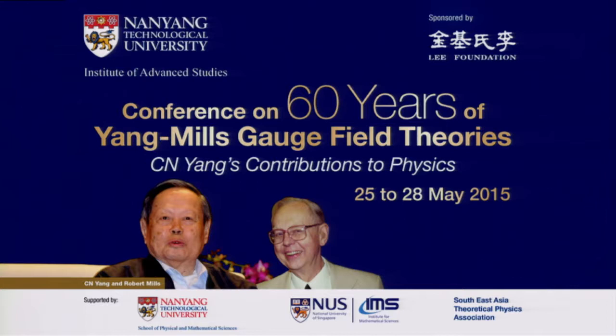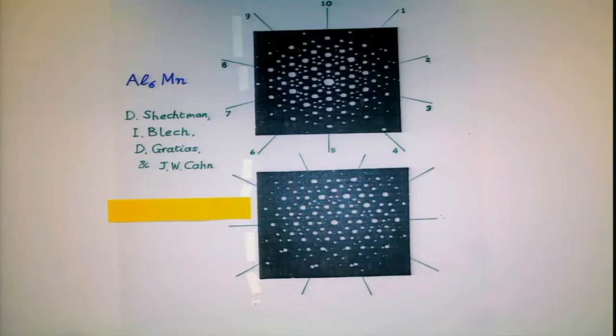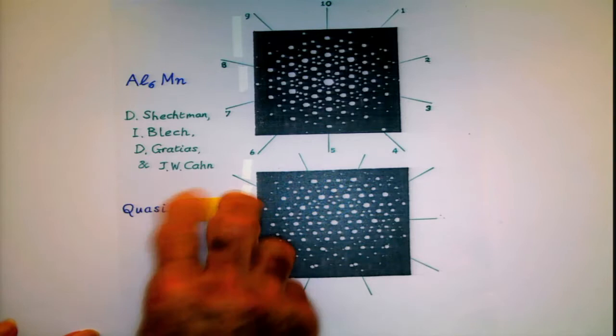...to the statistical theory of order-disorder transitions, and, as a result of that, he was certainly aware of the simplest models that you could use, and he must have been aware of pictures like this, which show the scattering that you observe when you get an alloy which orders in a particular form, and then as you raise the temperature, the order-disorder transition, the pattern changes.